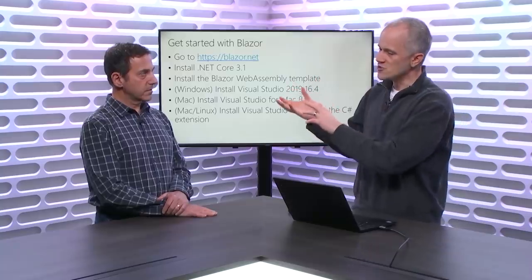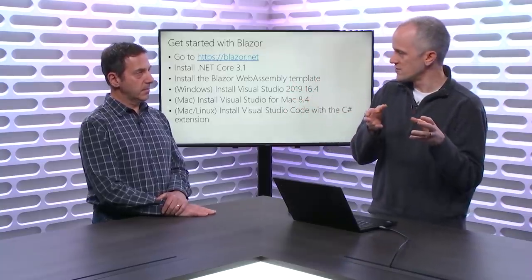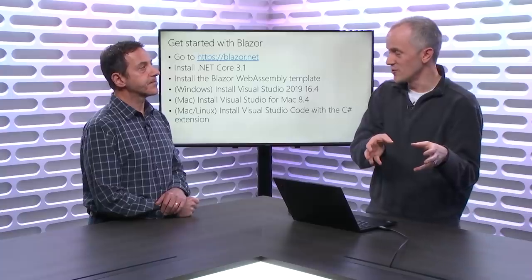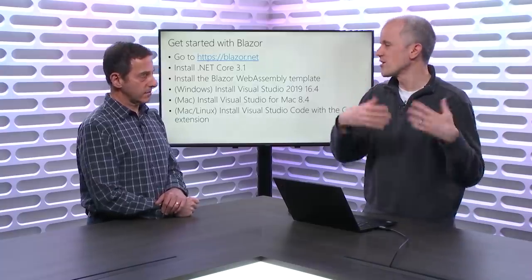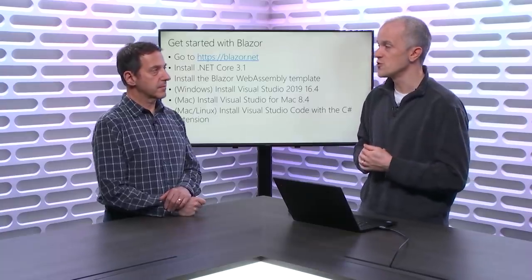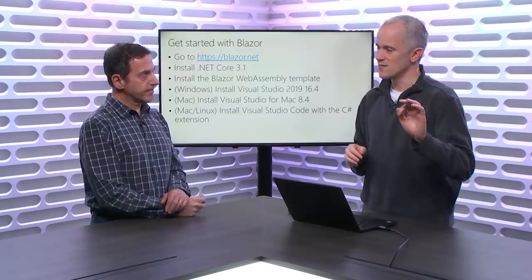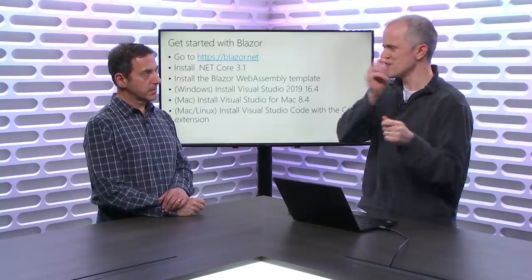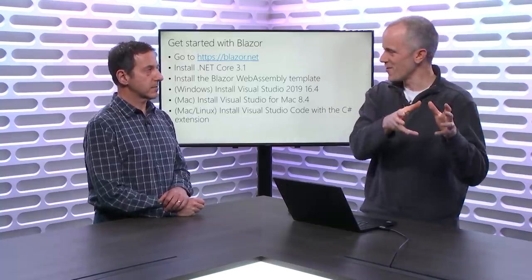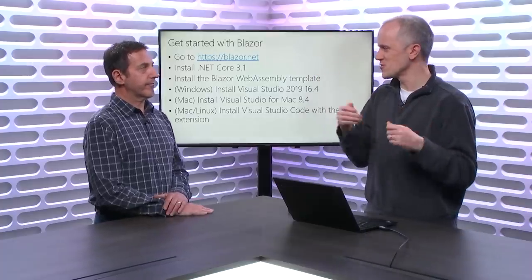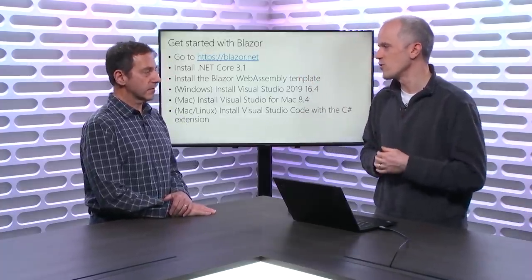Blazor WebAssembly allows you to actually leverage the client device — your code moves to the client and you can leverage the hardware, compute, and memory of the client machine. Blazor WebAssembly apps can run offline because you ship the code over to the client and run it there; you don't technically need a server piece for the app to function. And if you need really tight, low-latency UI interactions — like a drawing app — Blazor WebAssembly is right there on the user's machine, whereas with Blazor Server you're going over the network for UI gestures.